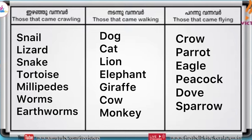Let's check some examples. A lion can walk or run from one place to another. A snail, a worm, a snake, or a palm can move from one place to another by crawling. A parrot, sparrow, crow, and birds like butterflies and dragonflies can move from one place to another by flying.